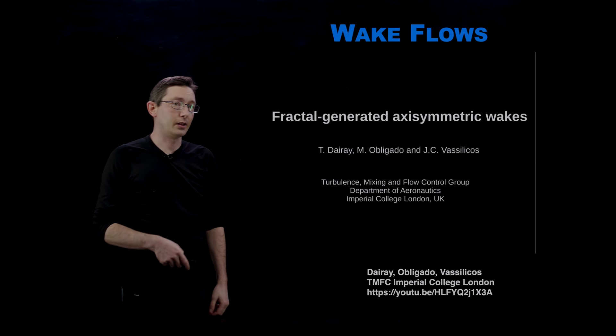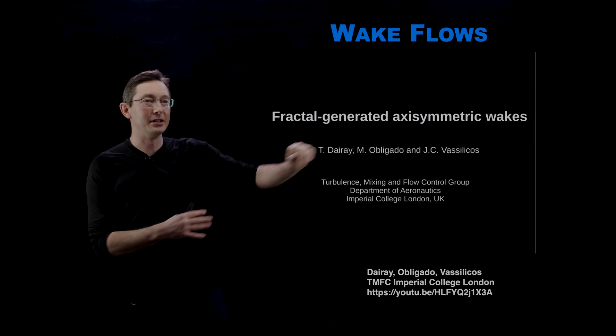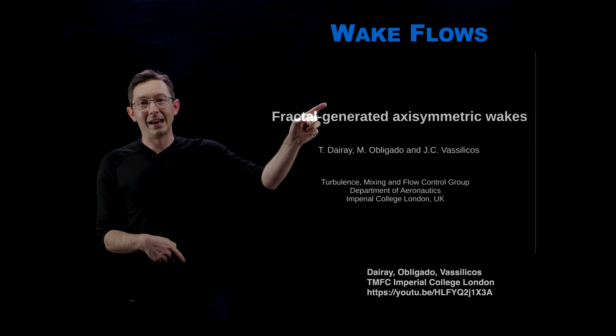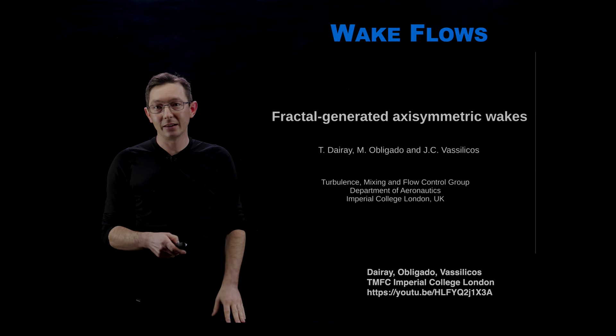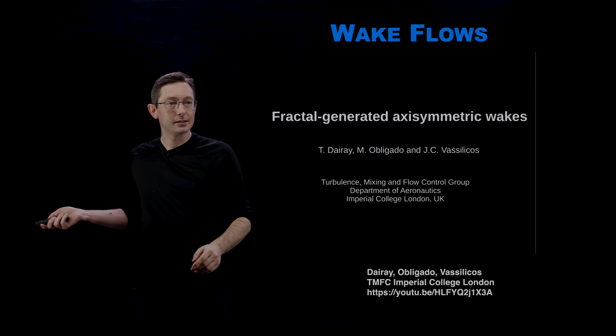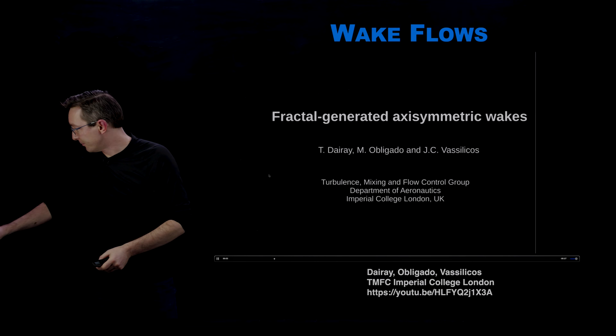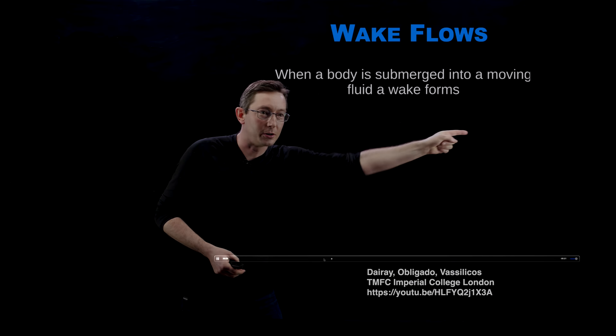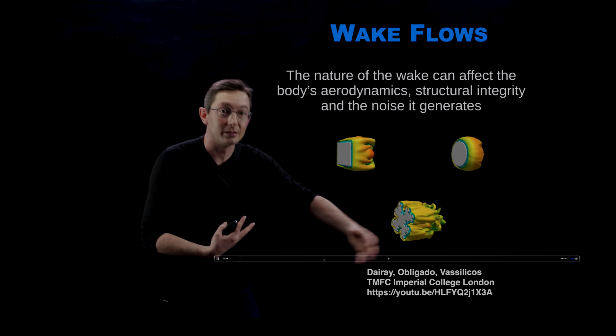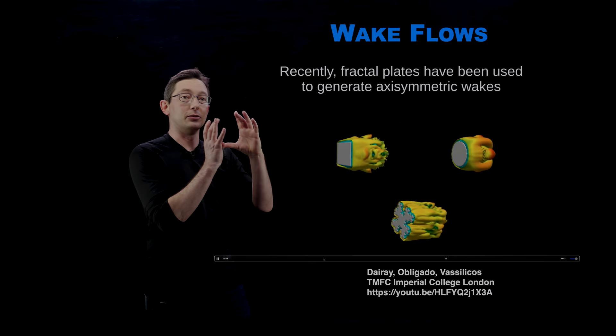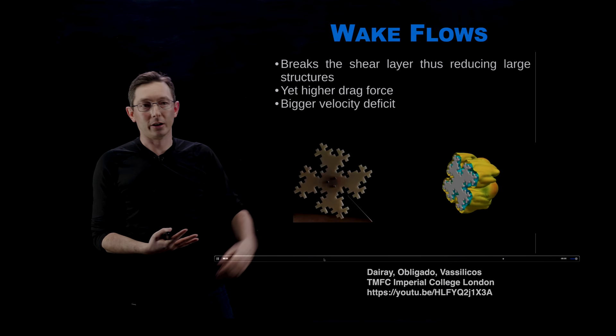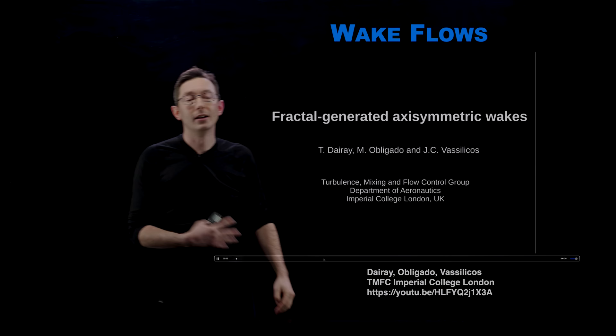I couldn't help but include this work where these researchers at Imperial College London are actually analyzing the wakes behind fractal geometries. In this work, they're looking at the wake behind a square, a circle, and then a fractal object. And I think this is super interesting. There are different drag profiles and mixing and turbulence that you can get with these fractal cross-section wakes. They actually do this experimentally, which I think is incredibly impressive.